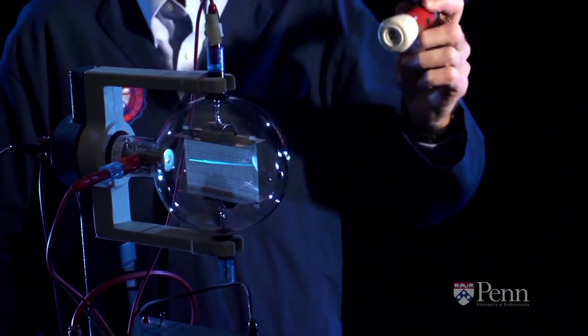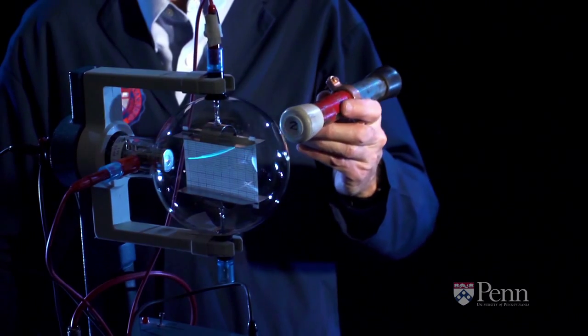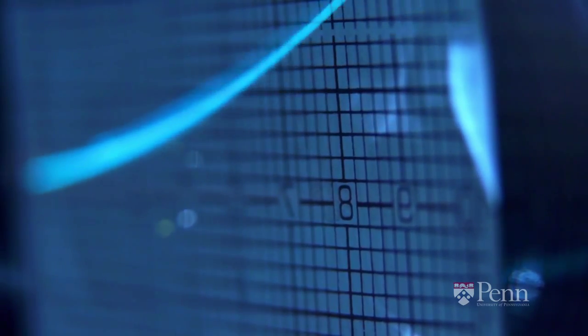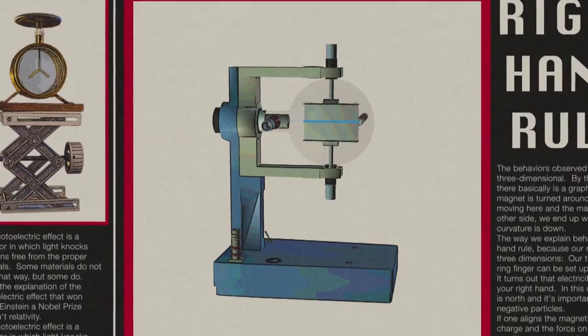And depending on which pole of the magnet we point, it moves up or down. This is something that we can't flatten into two dimensions. The behaviors are three-dimensional.